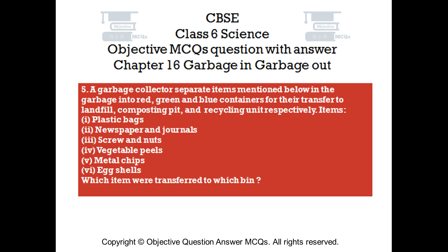Question number 5. A garbage collector separates items into red, green, and blue containers for transfer to landfill, composting pit, and recycling unit respectively. Items: 1. Plastic bags. 2. Newspaper and journals. 3. Screws and nuts. 4. Vegetable peels. 5. Metal chips. 6. Eggshells. Which items were transferred to which bin?